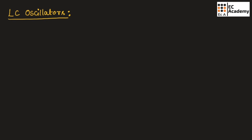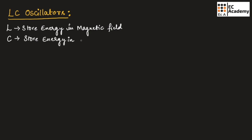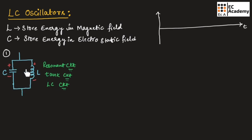Before going to the oscillator, let us understand the working of the LC tank circuit. The inductor will store energy in a magnetic field and the capacitor will store energy in an electrostatic field. Let us consider the combination of a capacitor and inductor connected in parallel as shown in this figure. Such a circuit is known as a resonant circuit, tank circuit, or LC circuit.